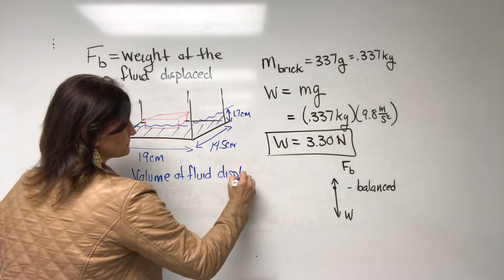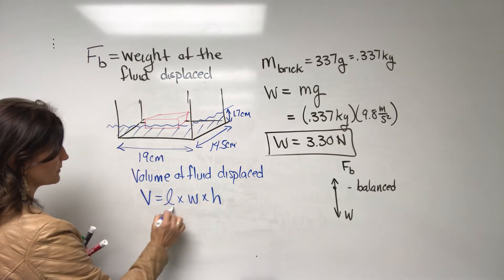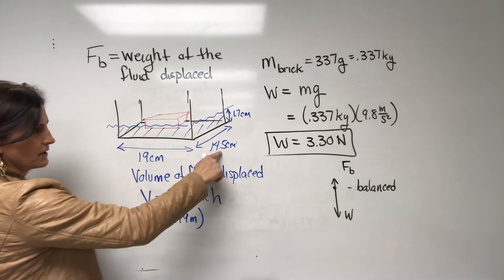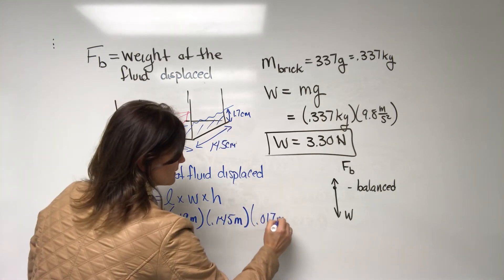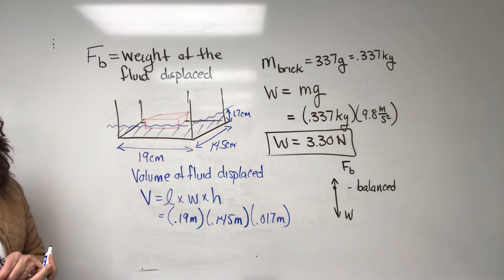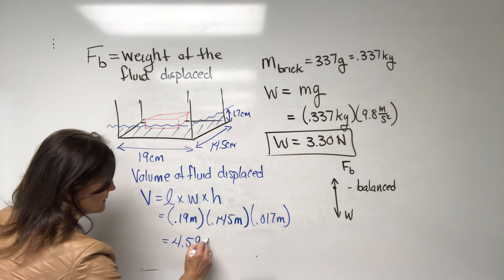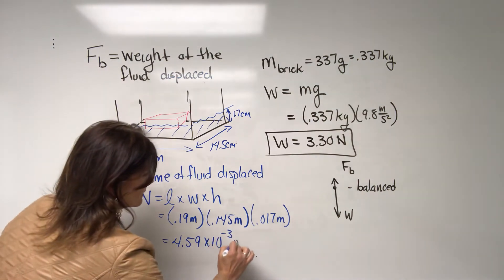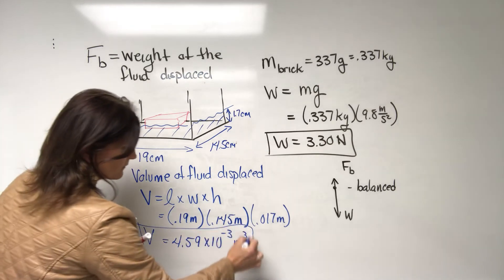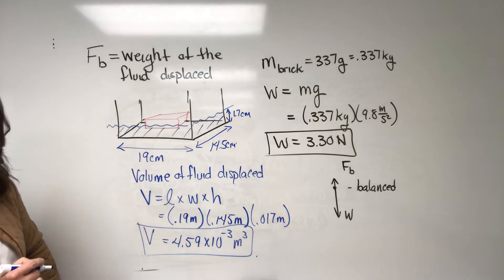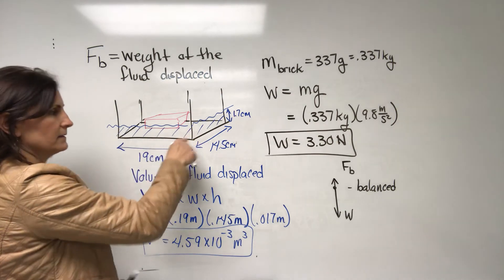So that gives us a volume of water displaced. Excuse me. Again, length times width times our height. So that length is going to be 0.19. Change that to meters. 0.145 meters. And 0.017 meters. So plugging that in, we get a total volume of 4.59 times 10 to the minus 3 meters cubed.